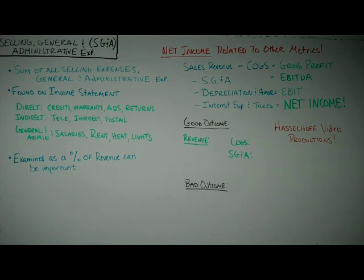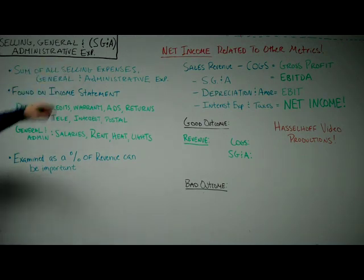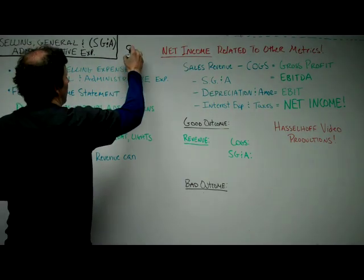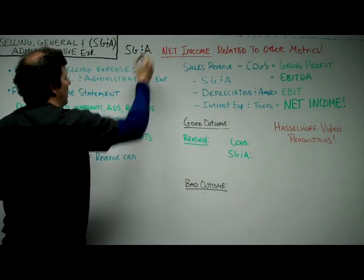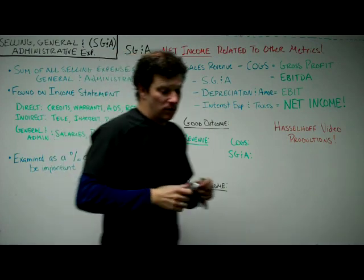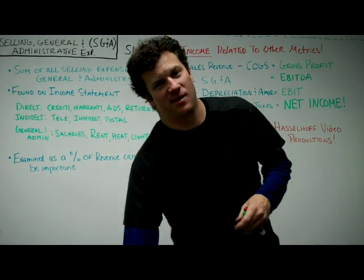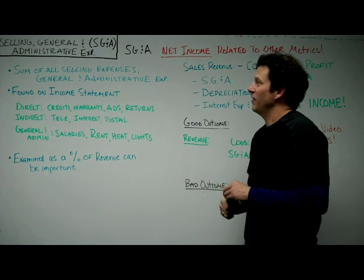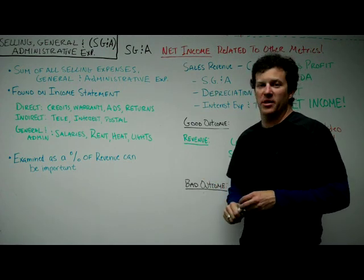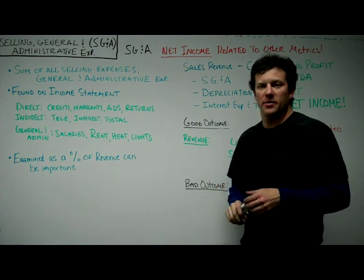Selling General and Administrative Expenses — that's what that says up in the upper left-hand corner. Selling General and Administrative Expenses, or SG&A, that's what people call it.